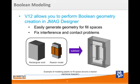Boolean geometry creation is also possible in JMeg. This allows you to add, subtract, or merge two components. In this example, a reactor core is subtracted from a rectangular solid body to form a body representing the surrounding space. This component is now an independent body that you can apply different material conditions or analysis properties to. The Boolean feature would also be useful to resolve mesh conflicts due to geometry interferences or small gaps between components.